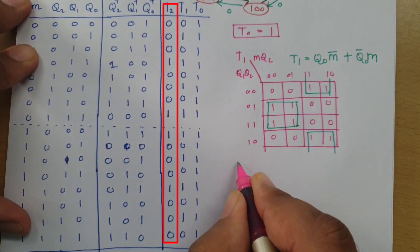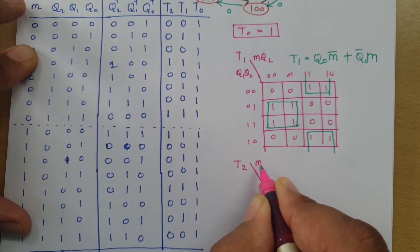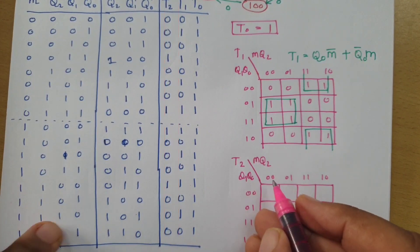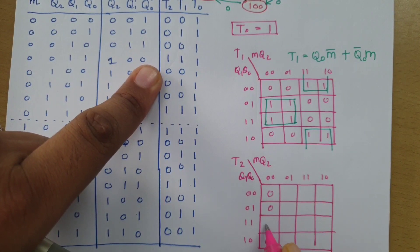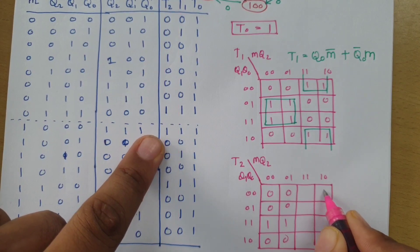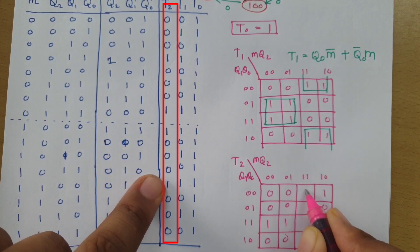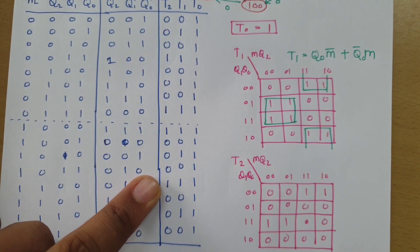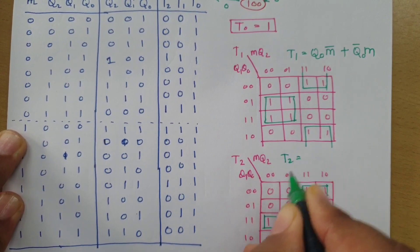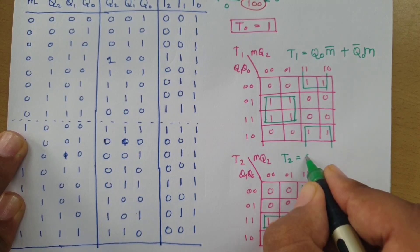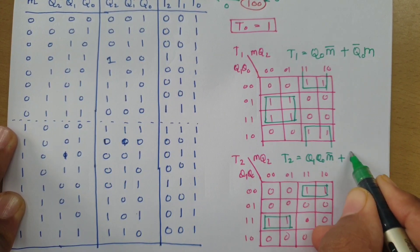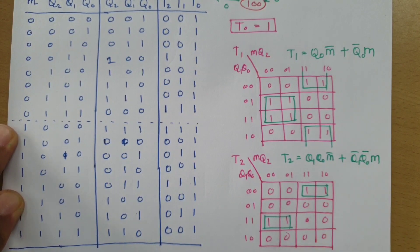For T2, the inputs are M, Q2, Q1, Q0. Filling and grouping the Karnaugh map, one group gives Q1·Q0·M̄ and the other gives Q1̄·Q0̄·M. So the Boolean expression is T2 = Q1·Q0·M̄ + Q1̄·Q0̄·M.